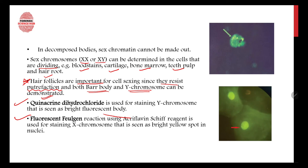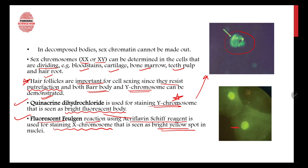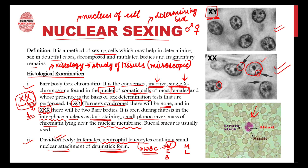Quinacrine dihydrochloride is used for staining Y chromosomes, and the Y chromosome is seen as a bright fluorescent body under the microscope — as visible in this picture. Fluorescent feulgen reaction using acriflavine Schiff's reagent is used for staining the X chromosome, which is seen as a bright yellow spot in the nucleus.